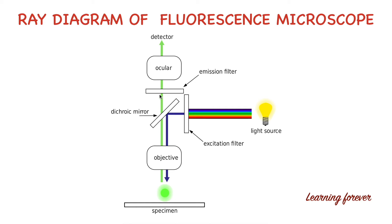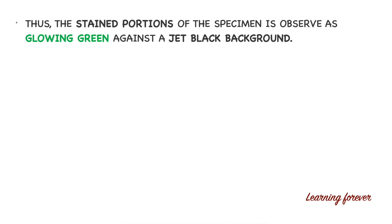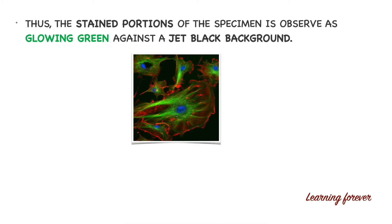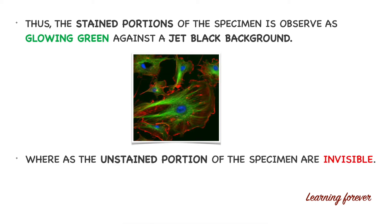The sample stained with fluorescence dye absorbs the blue light and emits green light. This green light passes through the objective and reaches the emission filter, also called the barrier filter. The barrier filter allows green light to pass to the eye and blocks any residual blue light from the specimen. You can then see the image using the fluorescence light, i.e., the green light. If you want to measure the intensity of light emitted by the specimen, you can use a spatial fluorescence detector. The stained portion of the specimen is observed as a glowing green against a jet black background, whereas the unstained portions remain invisible.